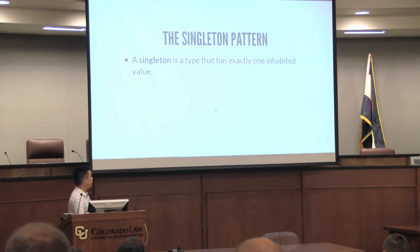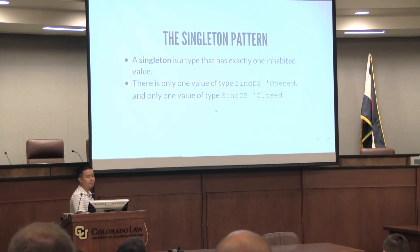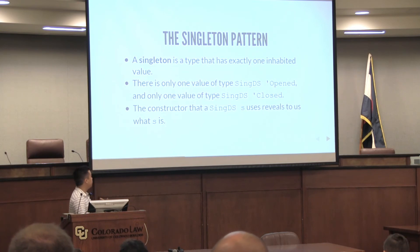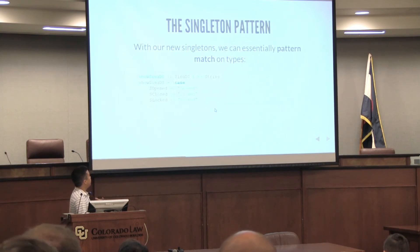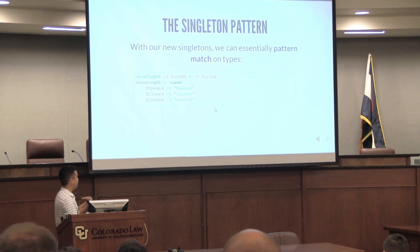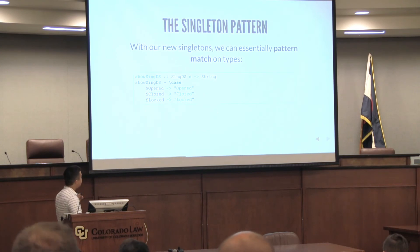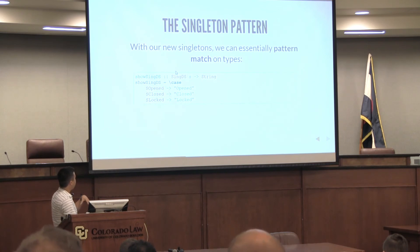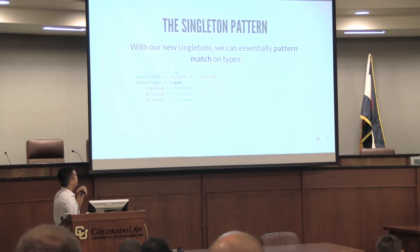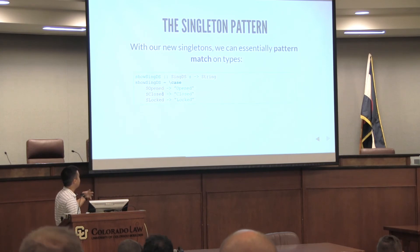The singleton pattern is a singleton type that has only one value. So there's only one value of type Sing DoorState Opened, and one value of type Sing DoorState Closed. The constructor that you use reveals to us what S is. So we can kind of pattern match on types now — that's the real magic of it. Given a new Sing DS, if we get SOpened we know the type is Open; SClosed means the type is Closed; SLocked means the type is Locked. So the S — we're basically pattern matching on the type. In this case branch S is Opened; here S is Closed; here S is Locked.